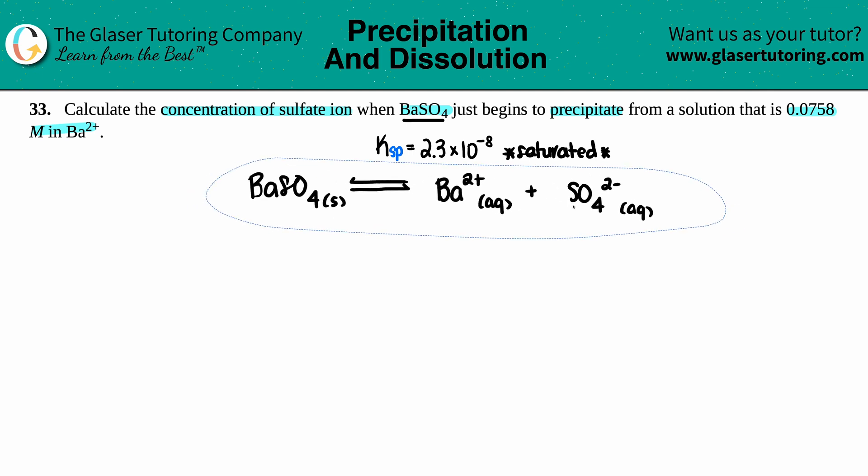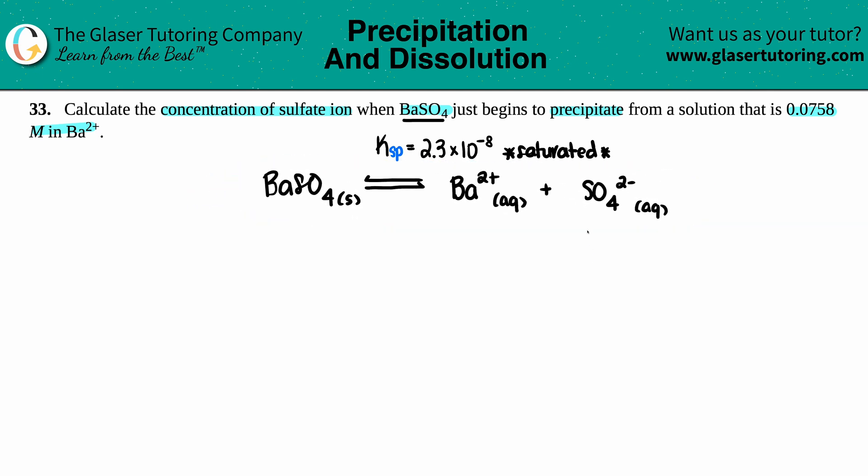The equation is already balanced. Let's write out what they told us. They told us the barium 2+ concentration is 0.0758 molarity. We're looking for the concentration of the sulfate ion, so I'll label that as x.